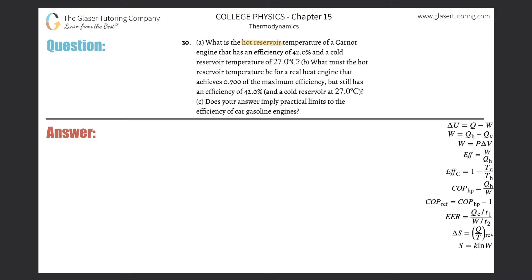Number 30, what is the hot reservoir temperature of a Carnot engine that has an efficiency of 42% and a cold reservoir temperature of 27 degrees Celsius? So basically we're looking at this formula over here for the Carnot engine.